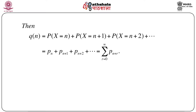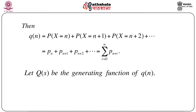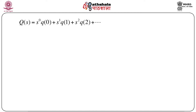Let Q(s) be the generating function of q_n. Then we can immediately write Q(s) = s^0 · q_0 + s^1 · q_1 + s^2 · q_2 + ..., and so on. Remember q_n = summation r=0 to infinity of p_{n+r}.